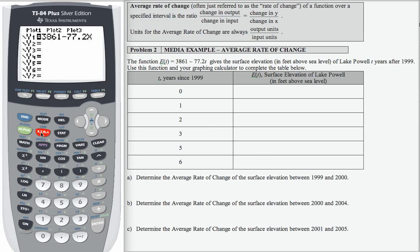What I want to do is access the table. But before I do that, I want to go to table set. That's this blue, so I'm going to do second table set. I want to be sure that my table starts at zero. My table starts at six, so I'm going to change that to zero. Also, I want to be sure that my change in table values, that's delta table equals one, and that both independent and dependent are auto.